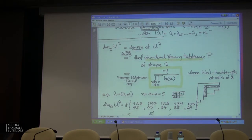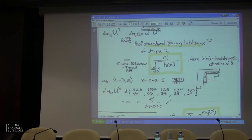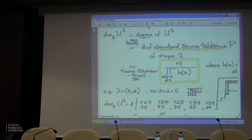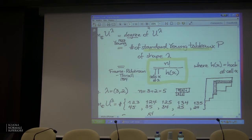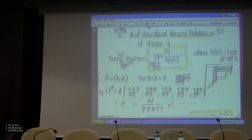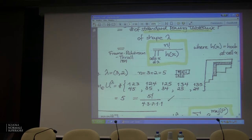For example, if lambda is (3,2), you put three cells in the first row and two in the second, and for each box you count cells weakly to its right and weakly below it — that's the hook length. For a shape with 5 standard Young tableaux, you'd compute 5! over the product of hooks. Lusztig in roughly 1979 computed the Q-analog — the fake degree polynomial for the irreducible representations of the symmetric group. It's not just the number of Young tableaux of shape lambda, but you count them according to a statistic called the major index of the tableau.